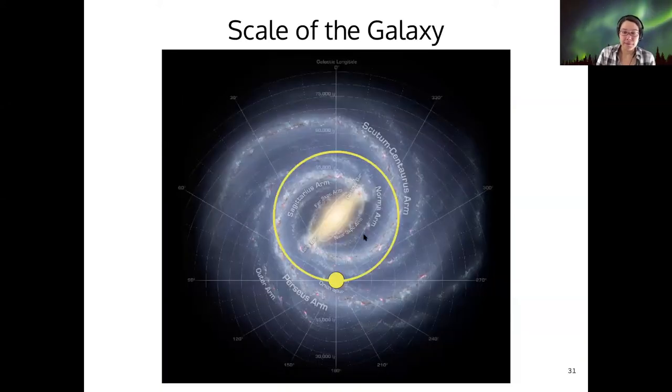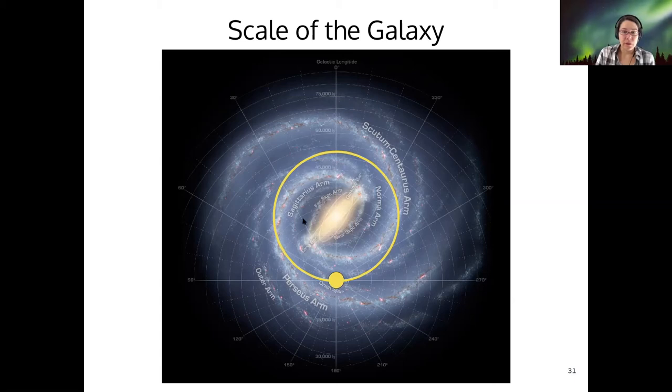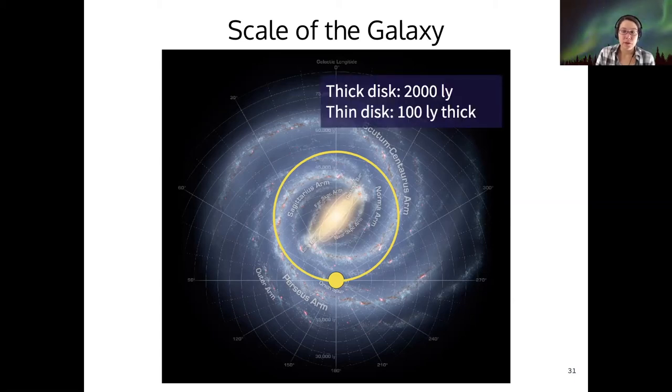So back to the scale of the galaxy. Here's the sun. And this is the orbit of the sun. And we look at the overall galactic disk. The total thickness of the disk is about 2000 light years for the thick disk and then 100 light years for the thin disk. So the thin disk is where most of the stars are located. And then some stars are a little bit above or a little bit below that main part of the disk.